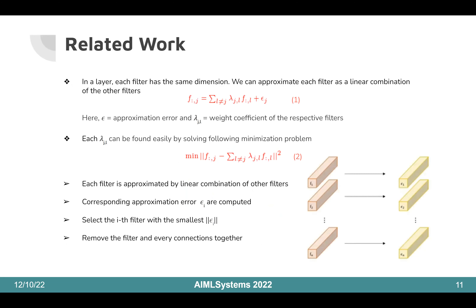In a layer, there are N independent filters, each with the same dimension. Therefore, each filter can be approximated as a linear combination of other filters as given in Equation 1. Here, the lambdas are constants and epsilons are the approximation errors, which have the same dimension as filter F. Each lambda is determined to minimize the value of epsilon, so the optimization problem given in Equation 2 is solved. Each filter is expressed as a linear combination of other filters with corresponding approximation errors epsilon_1 to epsilon_N. LRF then chooses the i-th filter with the smallest epsilon to prune. Whenever a filter is pruned, the filter and its connections are removed.